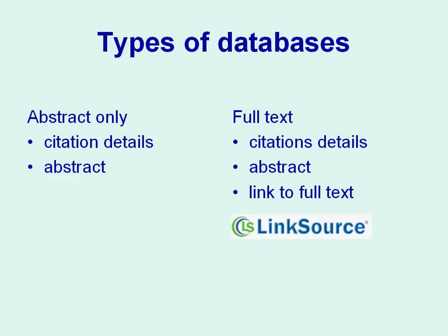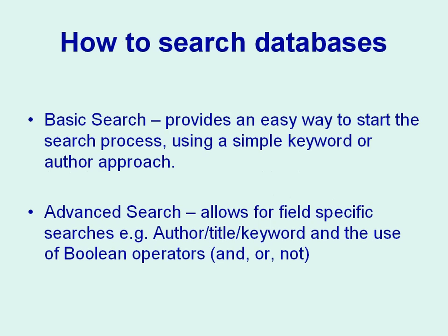Look out for the link source logo for connections to the full text. There are two types of searches: basic and advanced. The basic search, sometimes called a quick search, provides an easy way to start searching using a simple keyword or author approach. The advanced search allows you to search using a combination of terms with Boolean logic operators: AND, OR, and NOT.